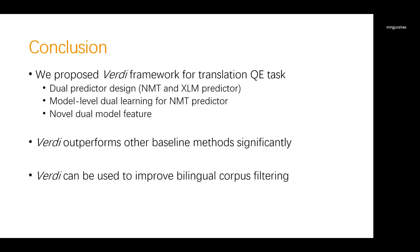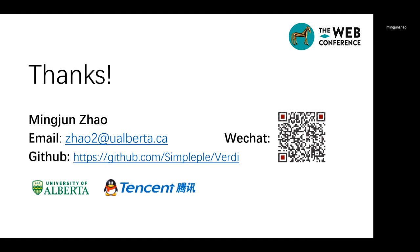To conclude, in this paper, we propose our Verdi framework to solve the quality estimation problem. Our prediction module includes a pre-trained XLM model and an NMT model that is trained through model-level dual learning. Besides, we also design a novel feature to construct a better representation of the target side. Experiments conducted demonstrate that our system yields a better performance than other baseline methods. We have also shown a potential application of employing QE methods for bilingual corpus filtering tasks and demonstrated its effectiveness. If you have any questions or thoughts on our paper, welcome to our session during the conference. You are also welcome to reach me through the contact information here. Thank you for listening.